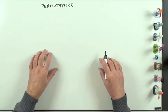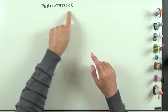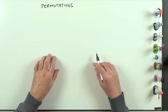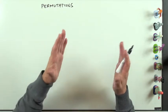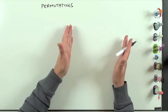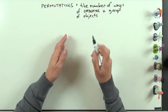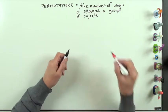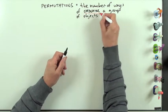Permutations and combinations. First of all, permutations — that is, the number of ways of ordering, with the important word being ordering.